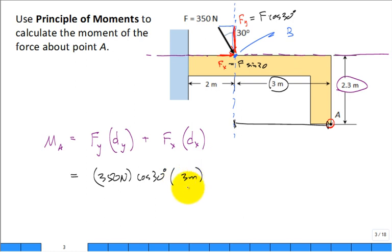And then I look and I say, doesn't it want to make it rotate in the counterclockwise direction? So I could show that as being, I don't know, in the clockwise direction and then put a negative sign on it. Or you could show it as being in the counterclockwise direction and leave a positive sign in front of it.